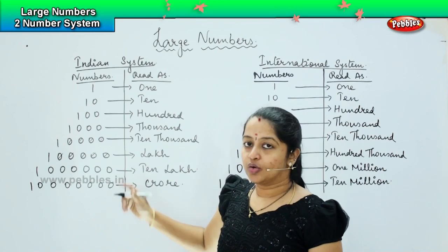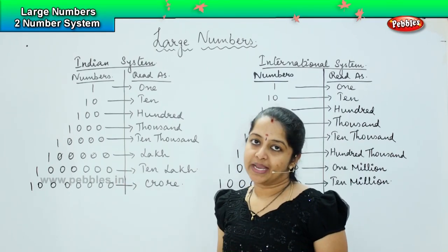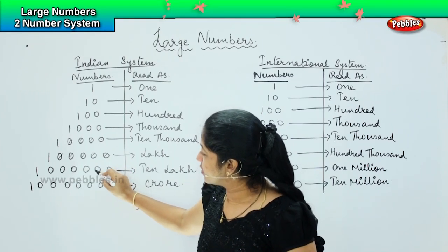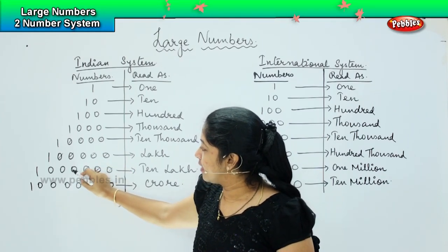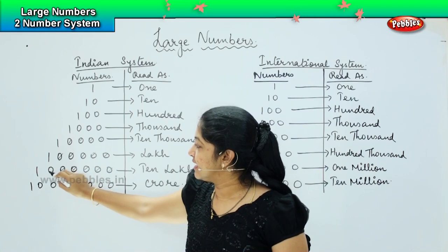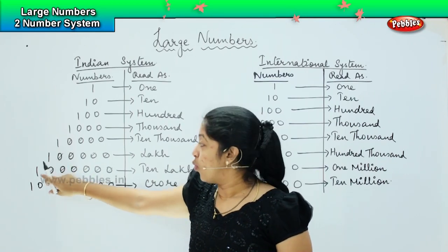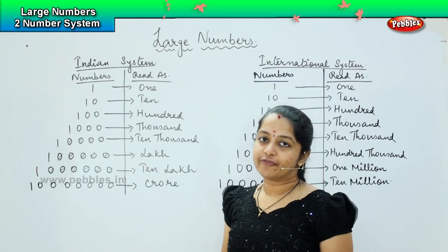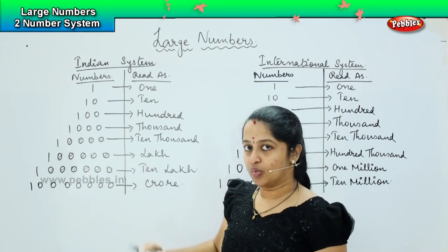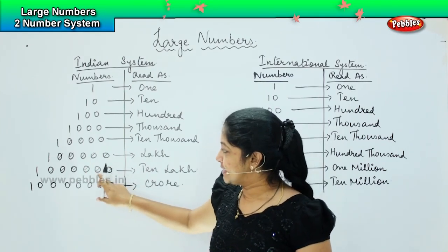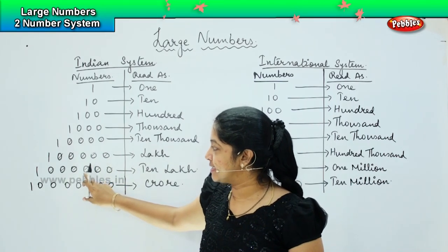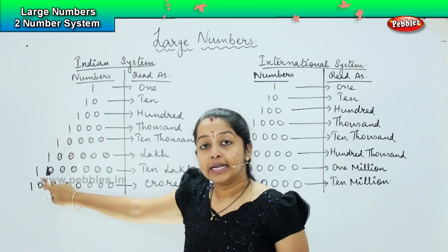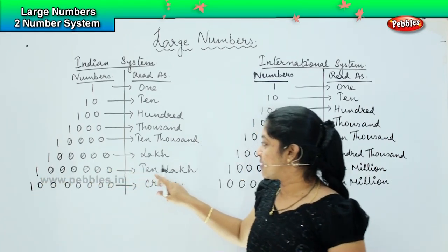Now I am going to add one more 0 behind 1. Let us count how many 0s there are: 1, 2, 3, 4, 5, 6 — so 1 followed by six 0s. Let us count in reverse: 1s, 10s, 100s, 1000, 10,000, lakh — so 1 followed by six 0s is called as 10 lakh.